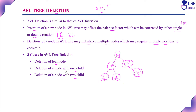Similarly, deleting a node with one child also affects the balance factor, and here it may affect the balance factor of multiple nodes. That also has to be corrected by implementing a rotation — sometimes multiple rotations are required.